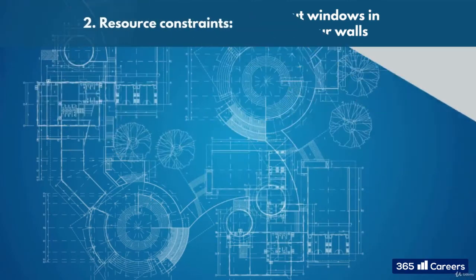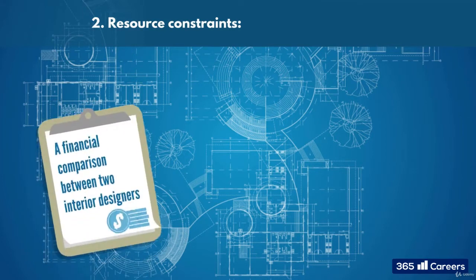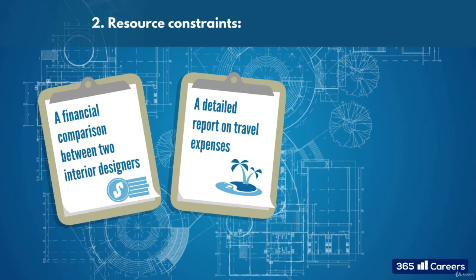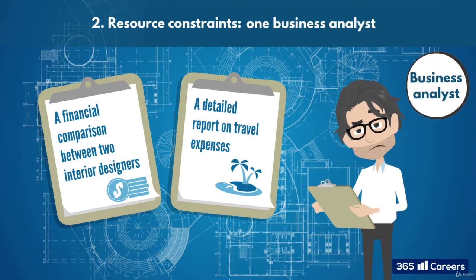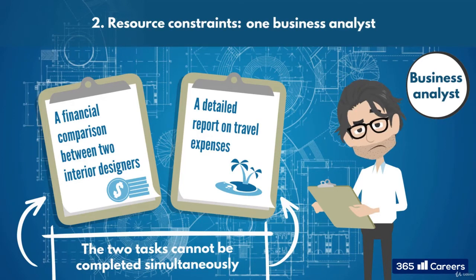Second, we've got resource constraints. Lack of resources can affect the sequencing of tasks. Let's say you have two work packages as part of your showroom project: one for performing a financial comparison between two potential interior designers, and another for preparing a detailed report on travel expenses. But you only have one business analyst and nobody else qualified to perform the tasks. The two tasks cannot be completed simultaneously; therefore, your business analyst has to finish one before they can start the other.